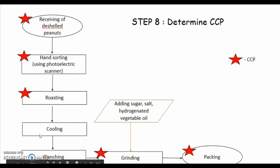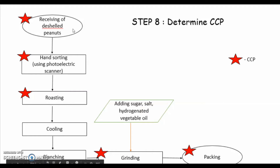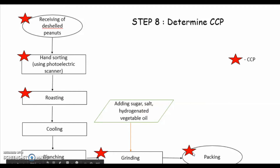This is our Step 8, which is to determine the CCP. Our process includes receiving of the shell peanut, hand sorting using photoelectric scanner, roasting, cooling, launching, grinding, and packing. Throughout this process we have found some CCPs: receiving of the shell peanut, hand sorting, roasting, grinding, and packing.